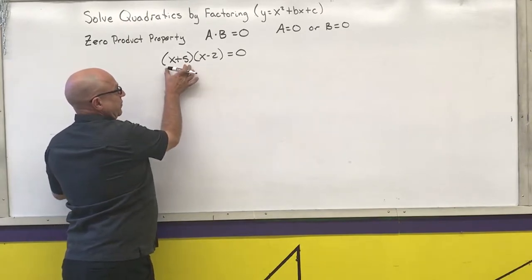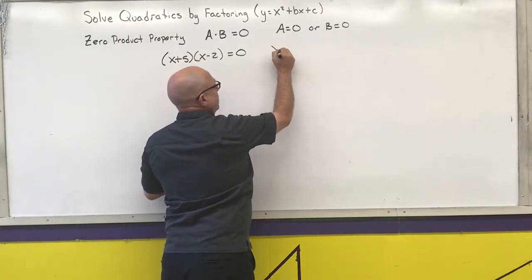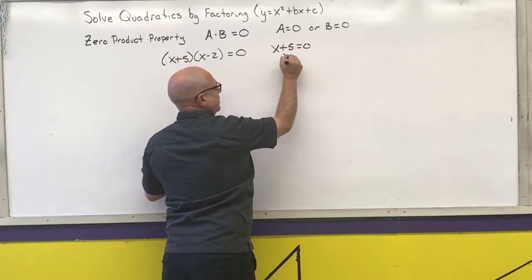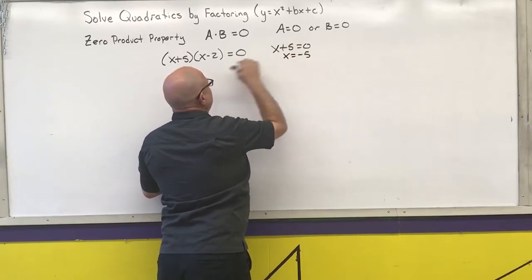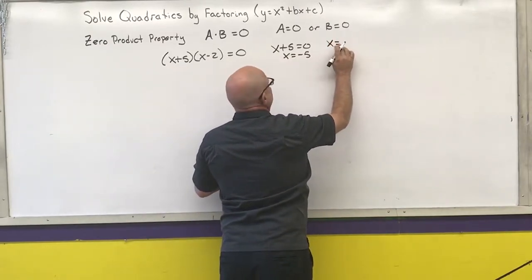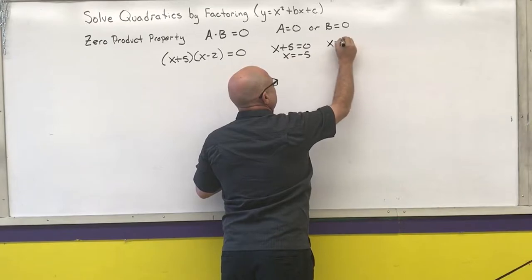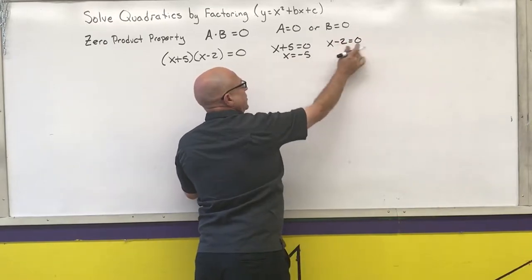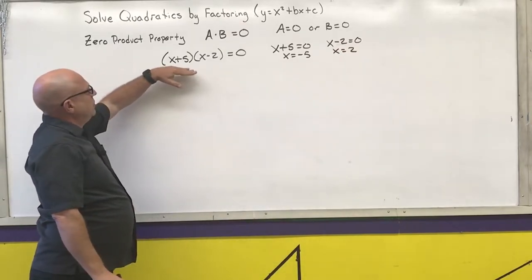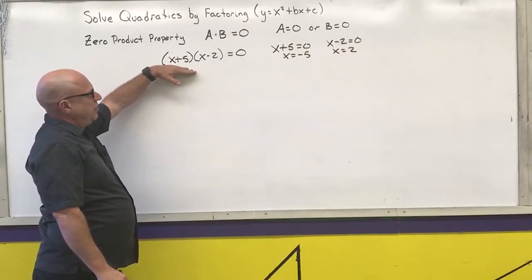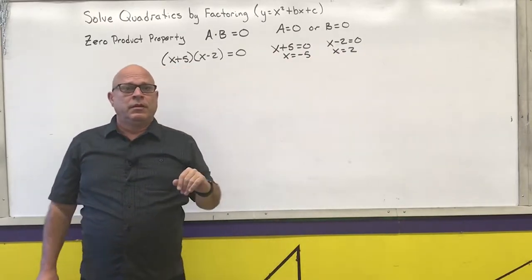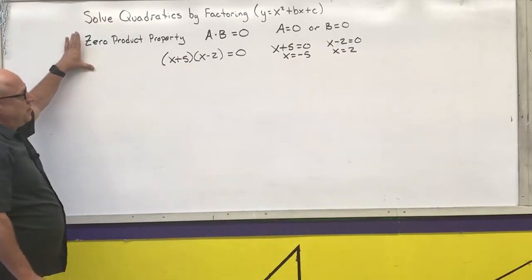I would set the first expression equal to zero and solve: subtract 5 from both sides. Then set the second expression equal to zero and add 2 to both sides. So the solutions to this expression would be x equals negative 5 or x equals 2. That's how the zero product property is going to come into play.